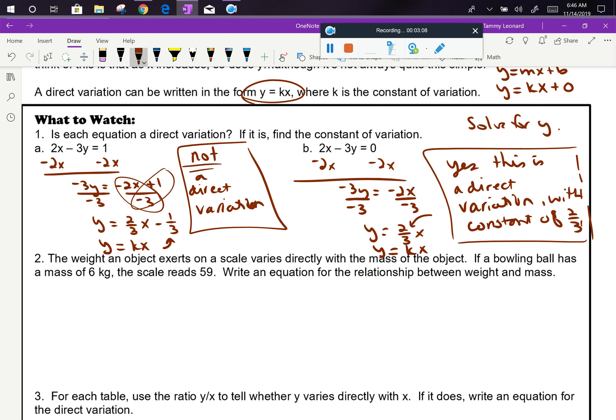In problem 2, we're going to use the idea of direct variation to help us solve problems. The weight an object exerts on a scale varies directly with the mass of the object. So the weight varies directly with the mass.